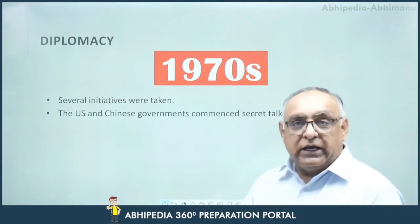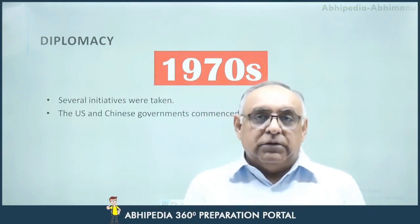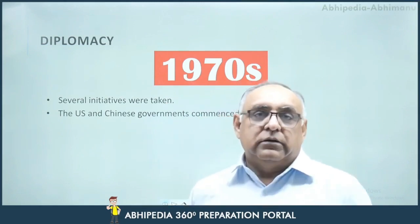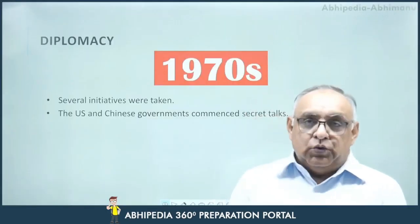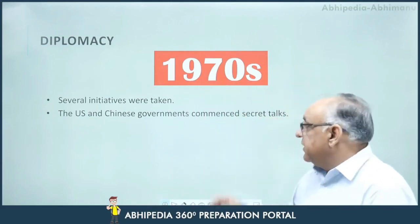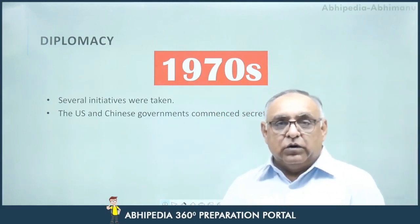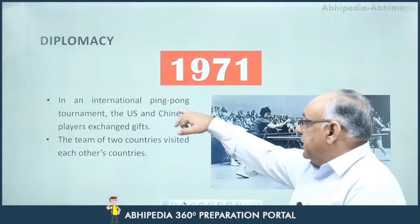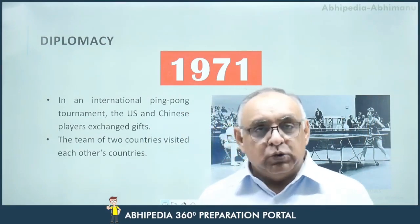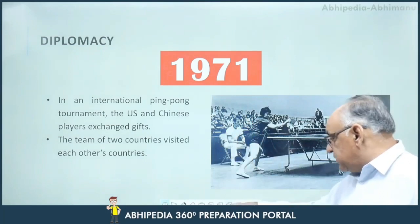So, in 1949, after the PRC's establishment, the U.S. did not support the People's Republic of China but cooperated with Chiang Kai-shek's government in Taiwan. In the 1970s, the U.S. thought it would be beneficial to establish relations with China, and several initiatives were taken. The U.S. and Chinese governments commenced secret talks, and in an international ping pong tournament, U.S. and Chinese players exchanged gifts. The teams of both countries visited each other's countries as well.